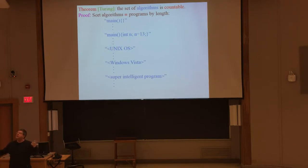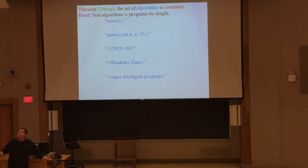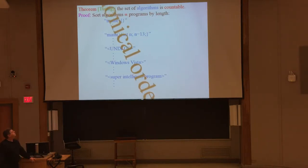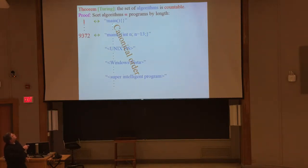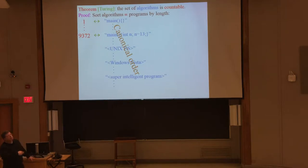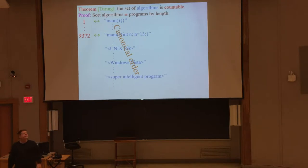This list of possible programs includes all programs an alien race might have written too, in whatever programming language and notation. It's a canonical order — a list of all possible programs — and we number them 1, 2, 3, 4. The smallest program is number one; a longer program might be number 9,300 or something. This shows you that the set of programs is countable. Longer programs may have very large numbers, but all numbers and all programs are there.